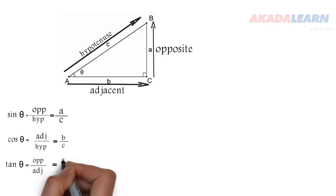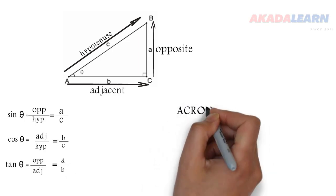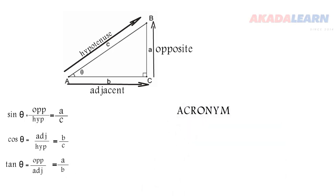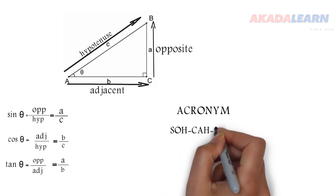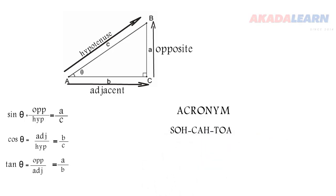Okay, so sine, cos, and tan, they are the basic trigonometric ratios. So let's see an acronym that can help us to remember these ratios. It is called SOHCAHTOA.